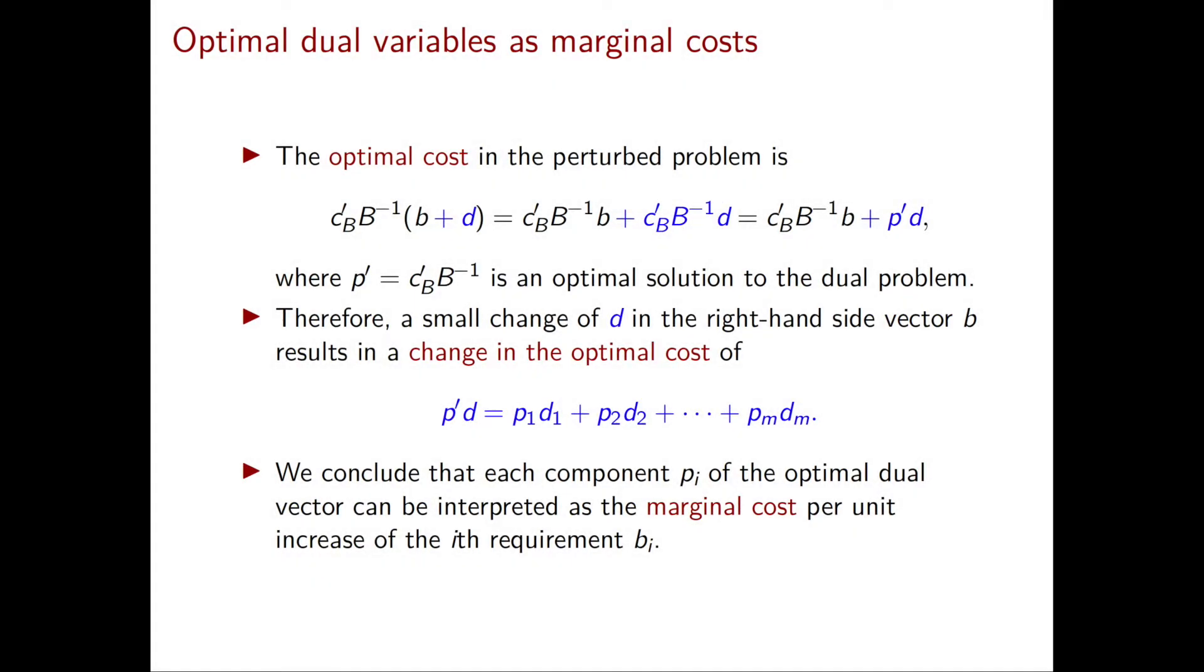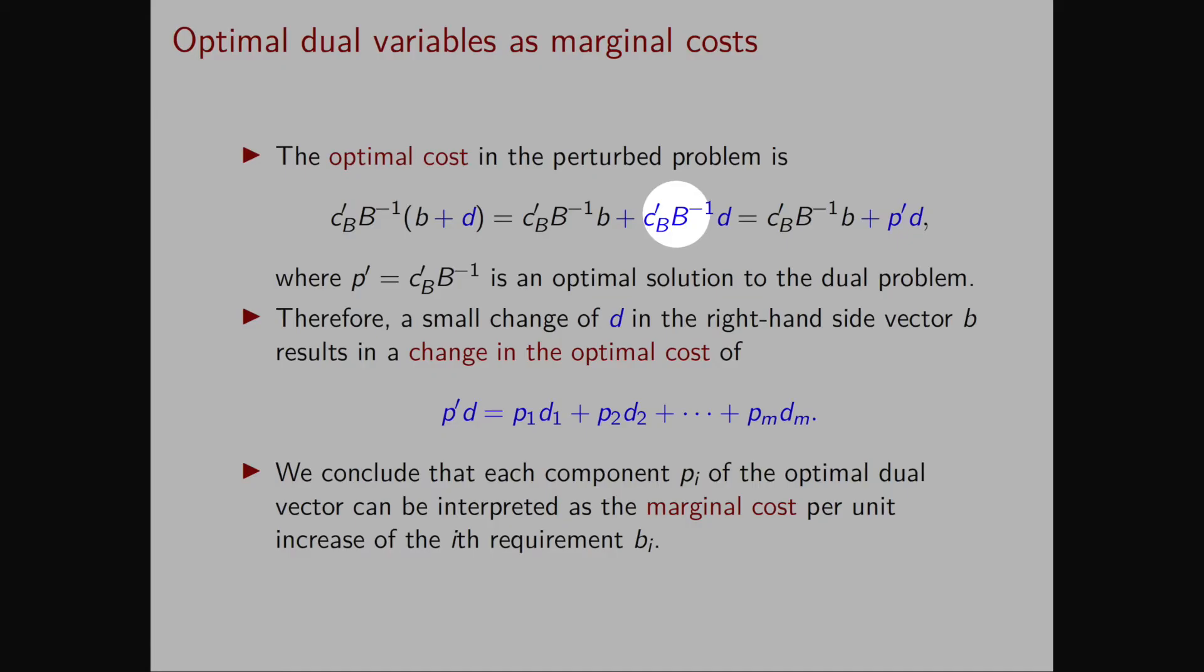In the second term, we have CB transpose B inverse, which is an optimal solution to the dual problem that we're going to call P.